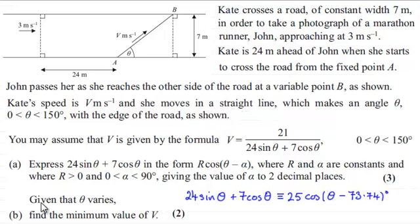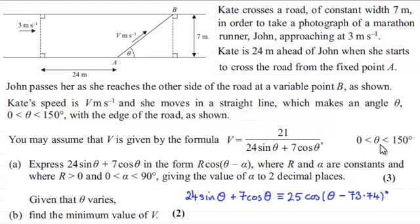For part B, we're told that given that theta varies, find the minimum value of V for two marks. We're given the formula V equals 21 divided by 24 sine theta plus 7 cos theta, and theta lies between 0 and 150 degrees.